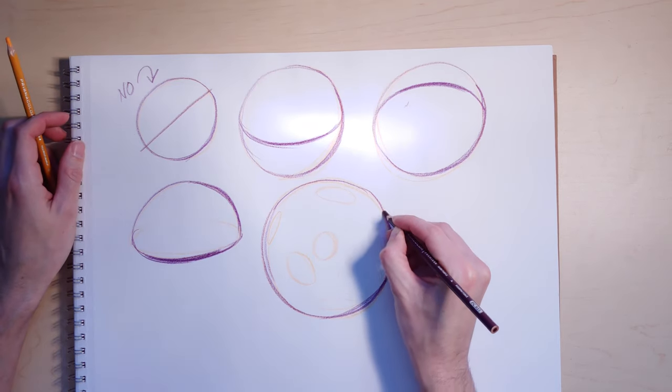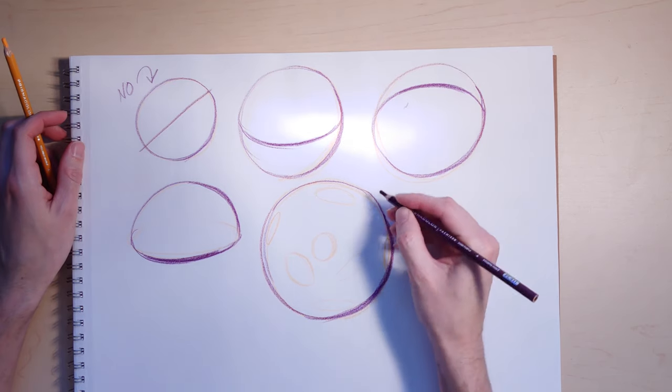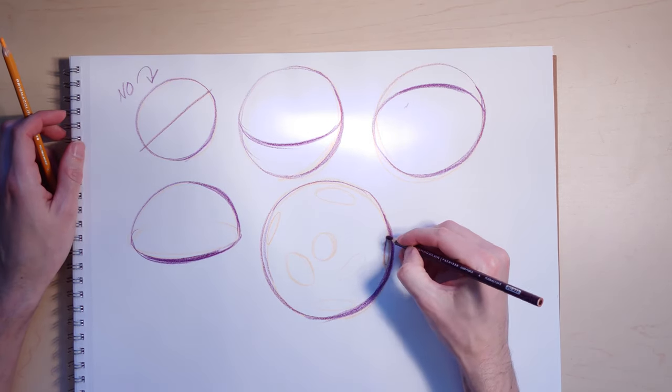I do that because it's easier to do a full ellipse than it is a partial ellipse much of the time. And I think line weight variety is really important.